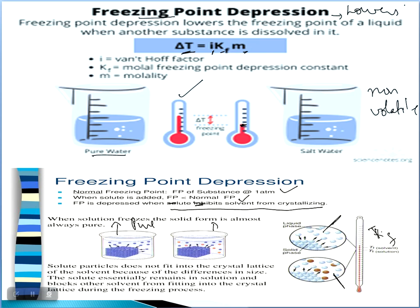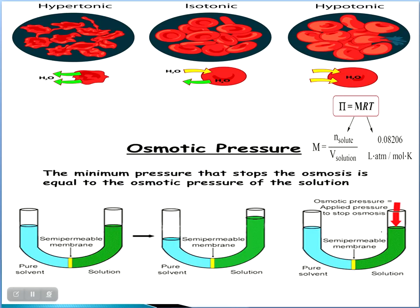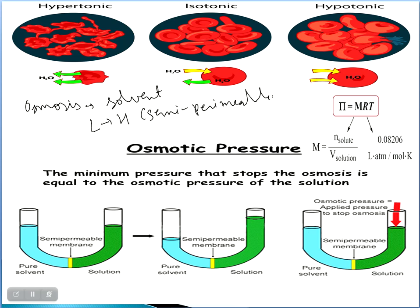Moving towards the next property: osmotic pressure. But first, we need to discuss what osmosis is. Osmosis means the movement of solvent particles from lower concentration to higher concentration through a semi-permeable membrane. You have to understand: osmosis involves a semi-permeable membrane, and solvent moves from lower concentration to higher concentration.